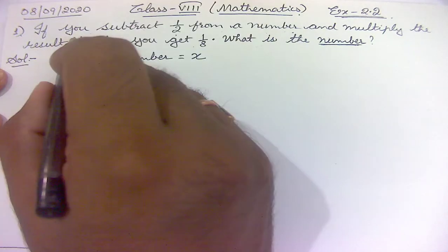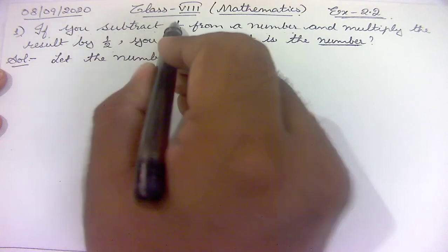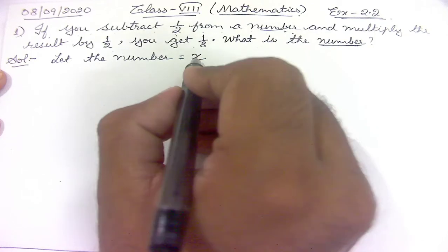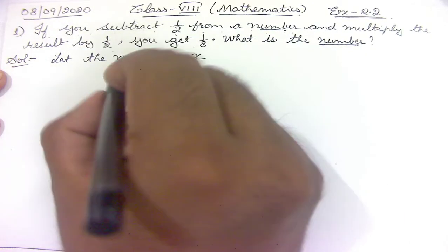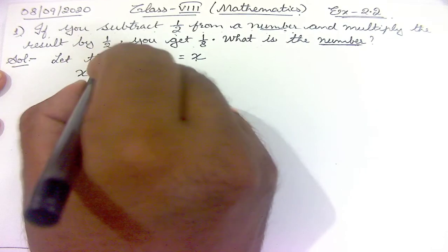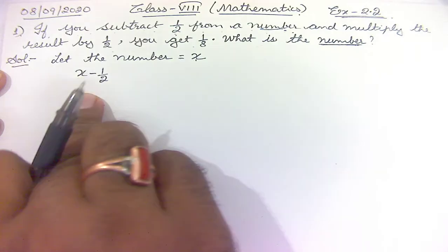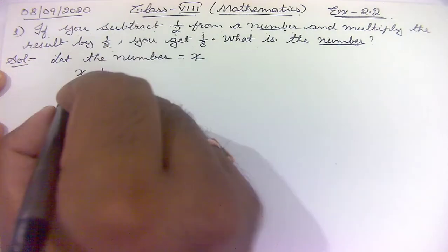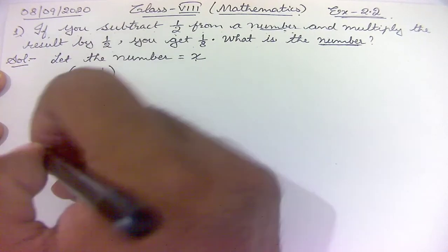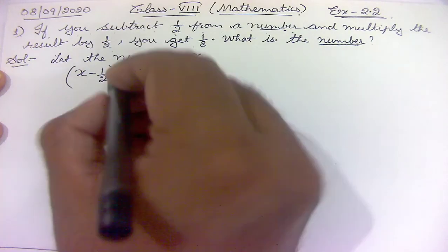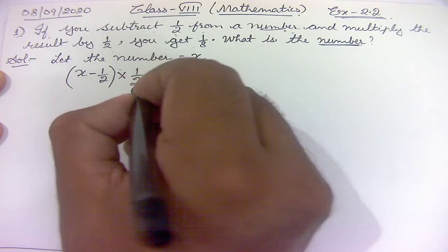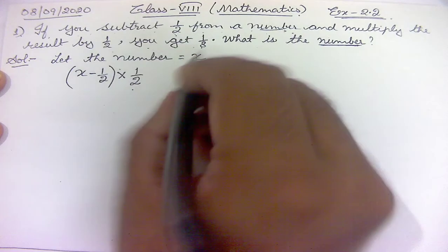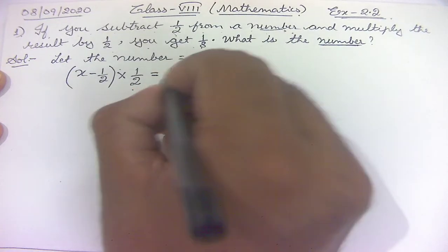According to the question, if you subtract 1/2 from a number, the number we have taken is x, so we get x minus 1/2. Then we multiply the result by 1/2. After subtracting, this is the result, and this result is multiplied by 1/2, giving 1/8. So the equation is: (x − 1/2) × 1/2 = 1/8.